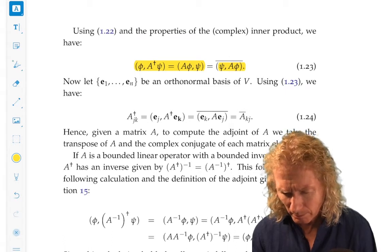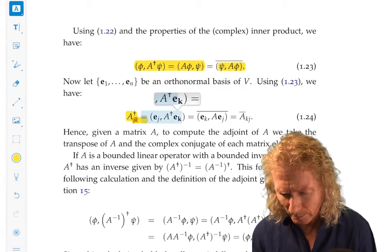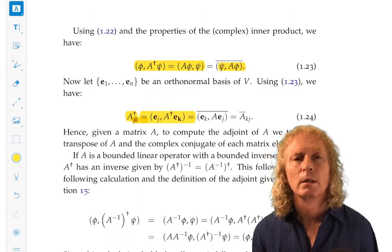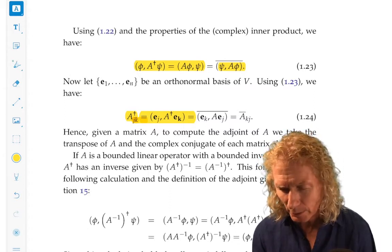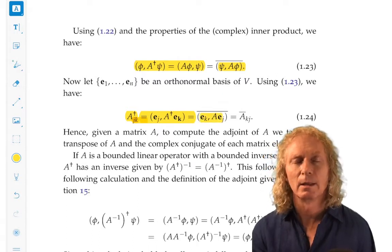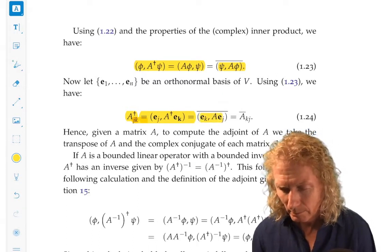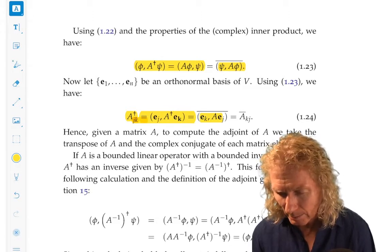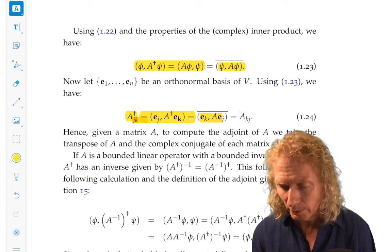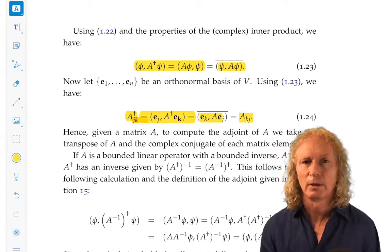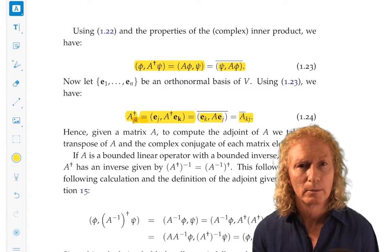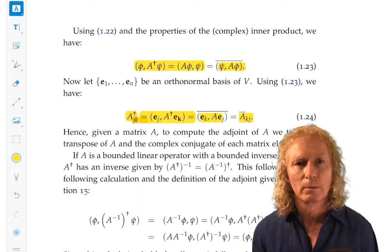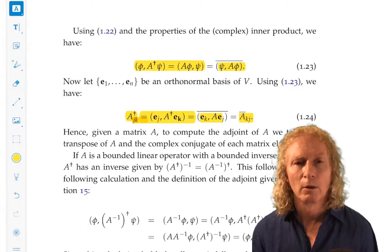In that case, remember that Ajk, the matrix elements, or Ej, in a product with A dagger Ek. But, we can swap them around. Using the relation above, we get a complex conjugate on top, and that is nothing more than Akj with a complex conjugate on top. So, what this tells us is that the matrix elements of the adjoint of an operator is a transpose of that operator, along with taking the complex conjugate of every element in the matrix when we take the transpose.